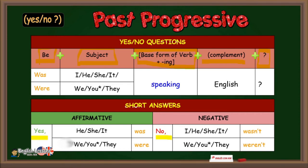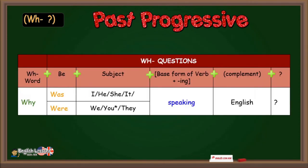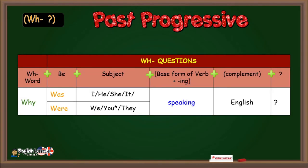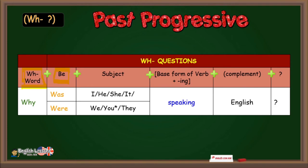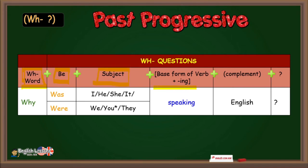Finally, in order to make WH questions or information questions, you must write first the WH word, plus verb to be, plus subject, plus gerund, plus complement, plus question mark.